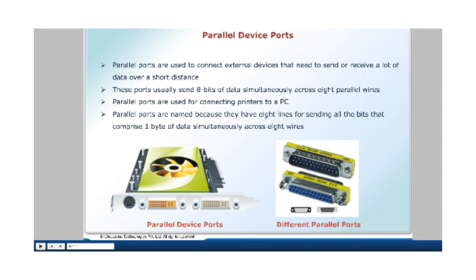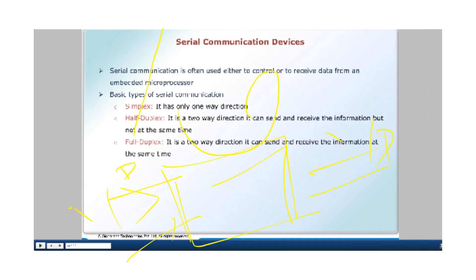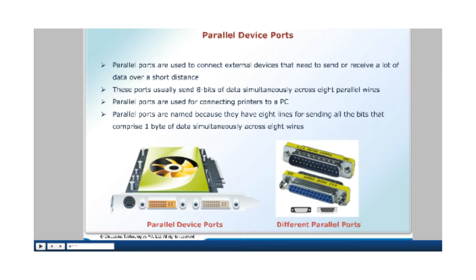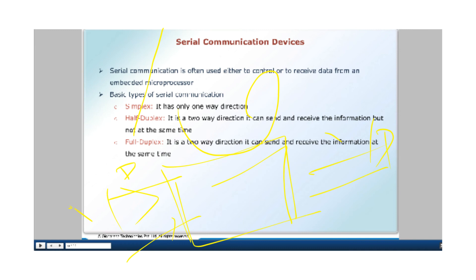What is the definition of simplex? Simplex is only one-way direction — it can either send or receive data, but not both at the same time. That means we can only send or receive the data; it is not possible to do both simultaneously. That is known as simplex.